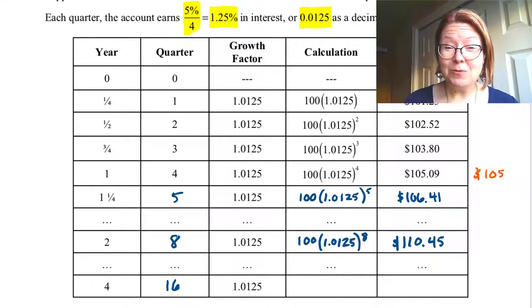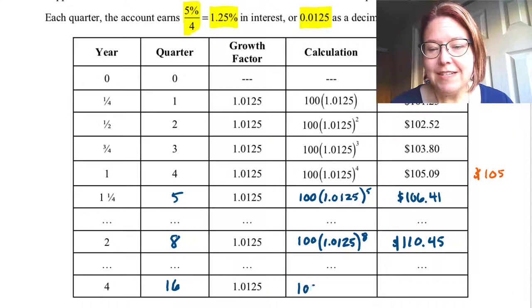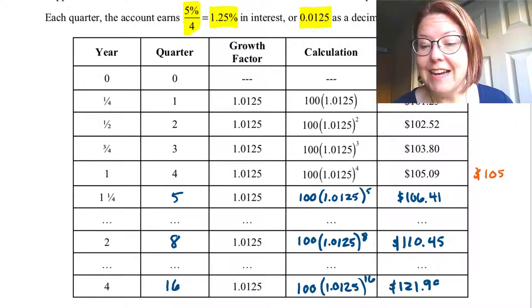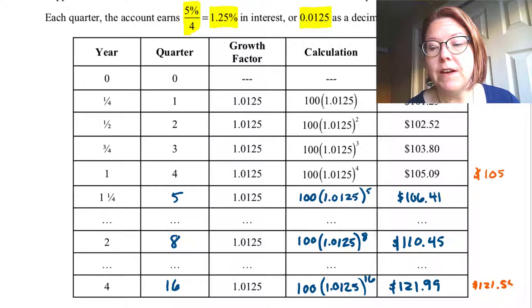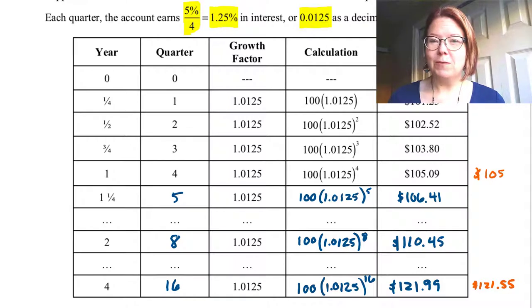Finally, year four is quarter sixteen. Every year has four quarters, so four times four gives us sixteen. The calculation would be 100 times 1.0125 raised to the sixteenth power, resulting in $121.99. Compare this to the result with simple annual interest, which was $121.55. So this compounding quarterly has netted us about 44 cents more over four years, which doesn't seem like a lot. But if this was $100 million, that would be a much bigger difference between the compounding and the annual interest.